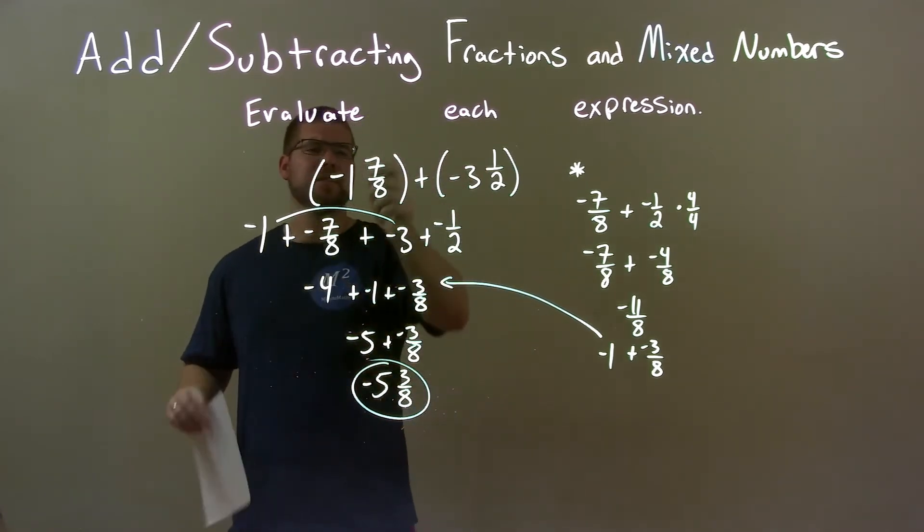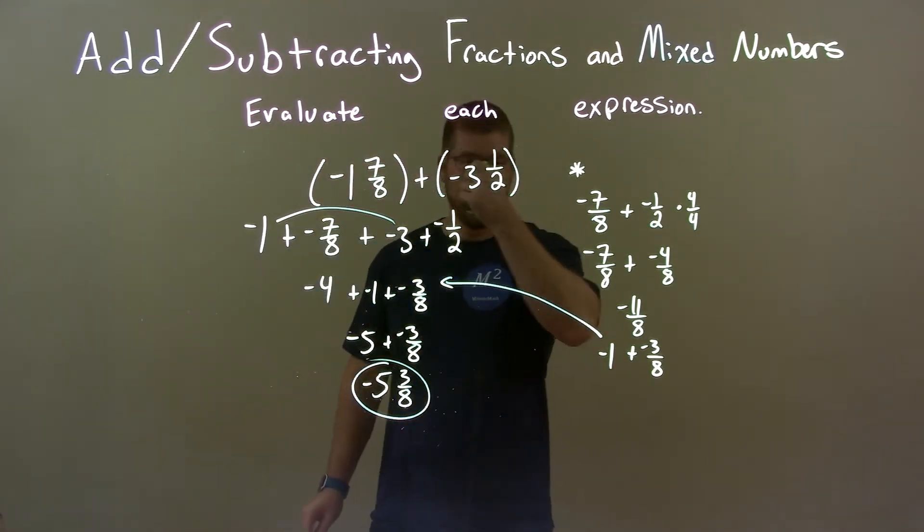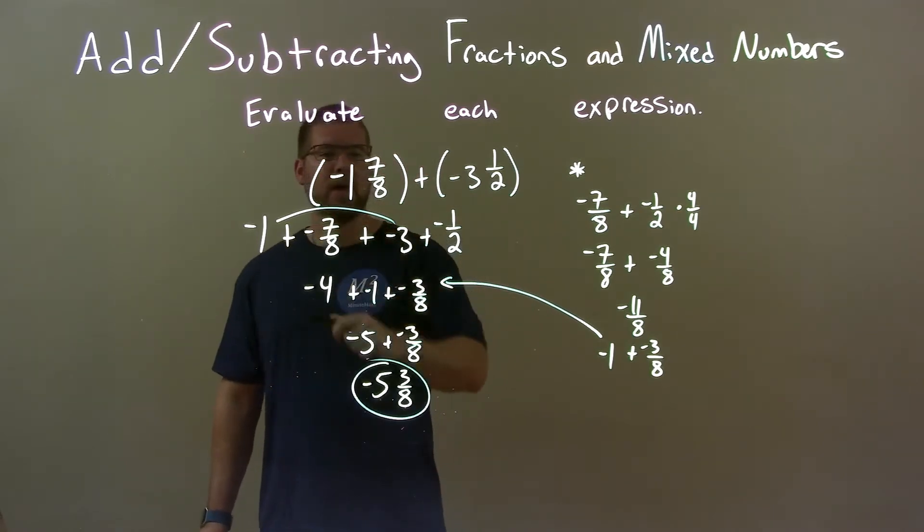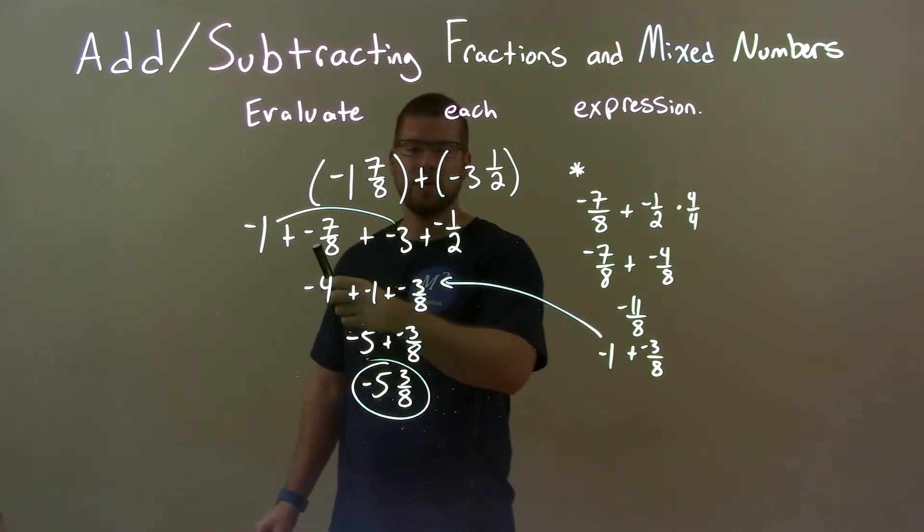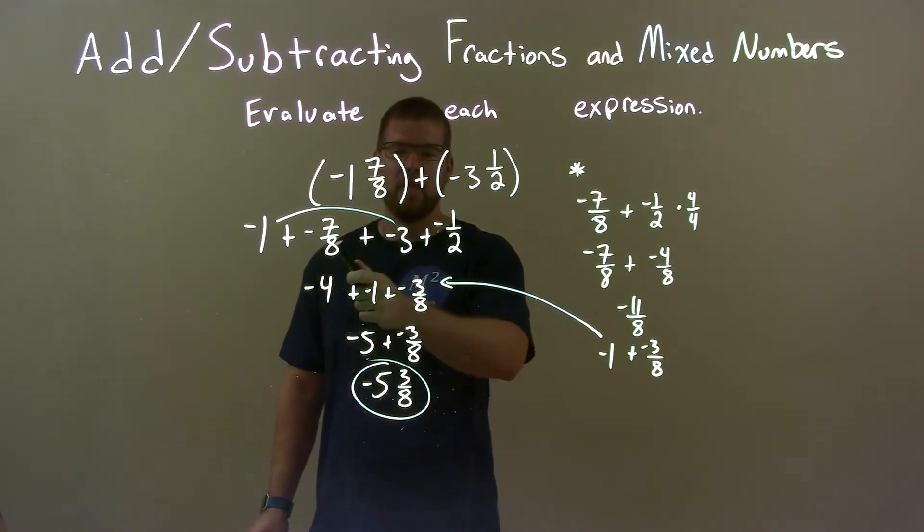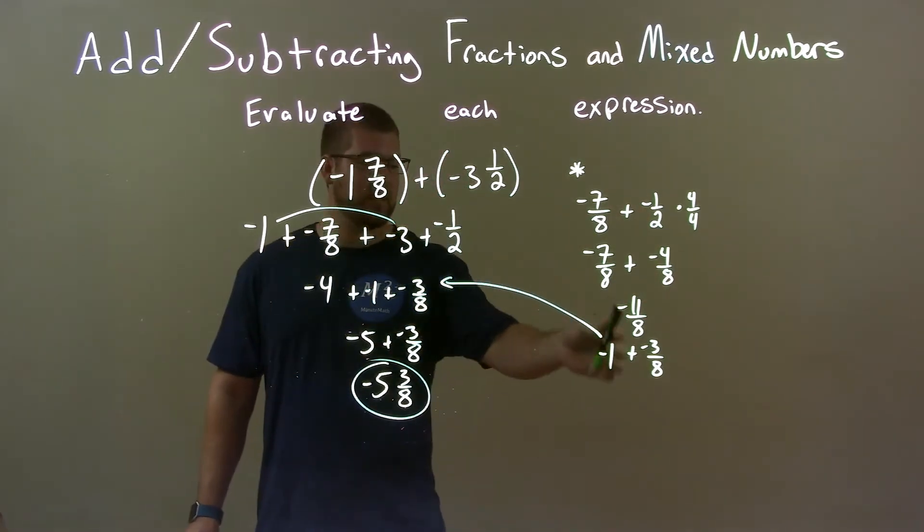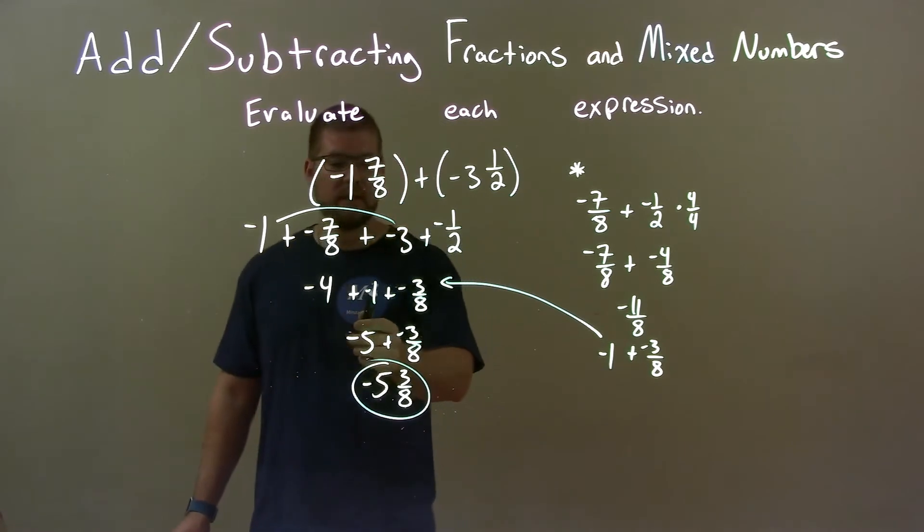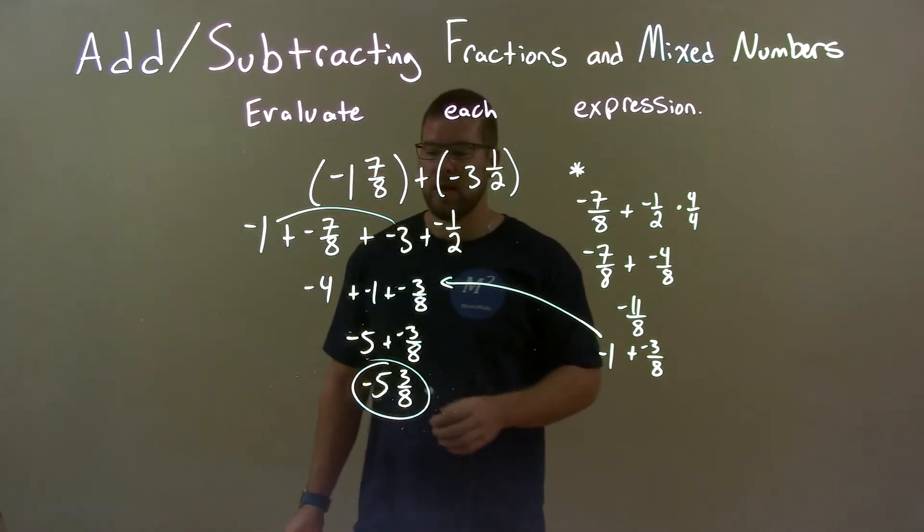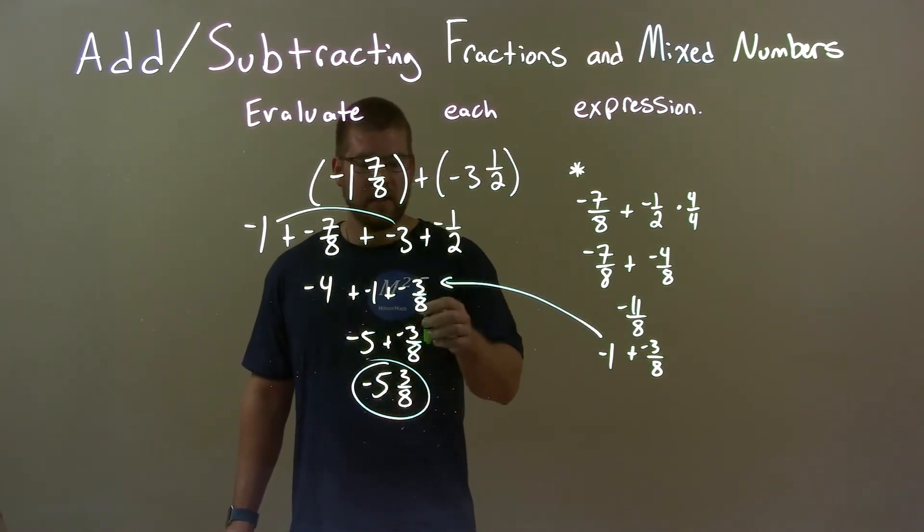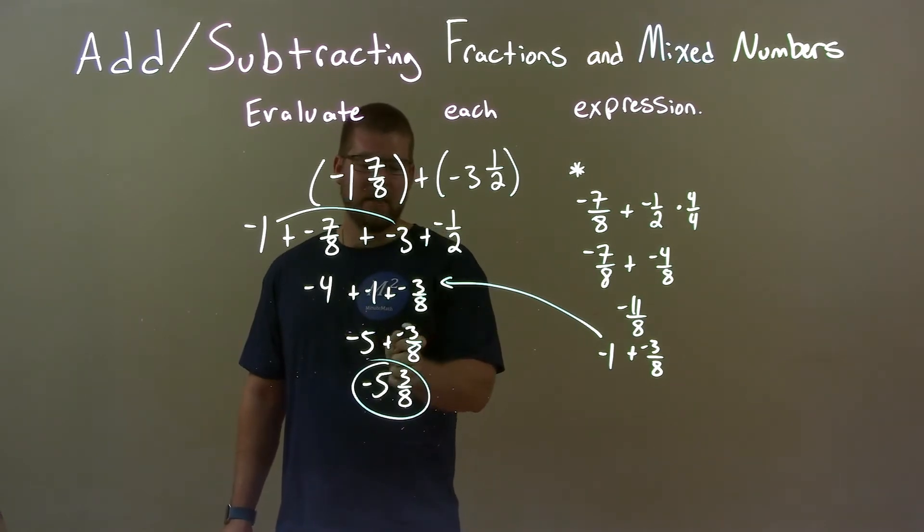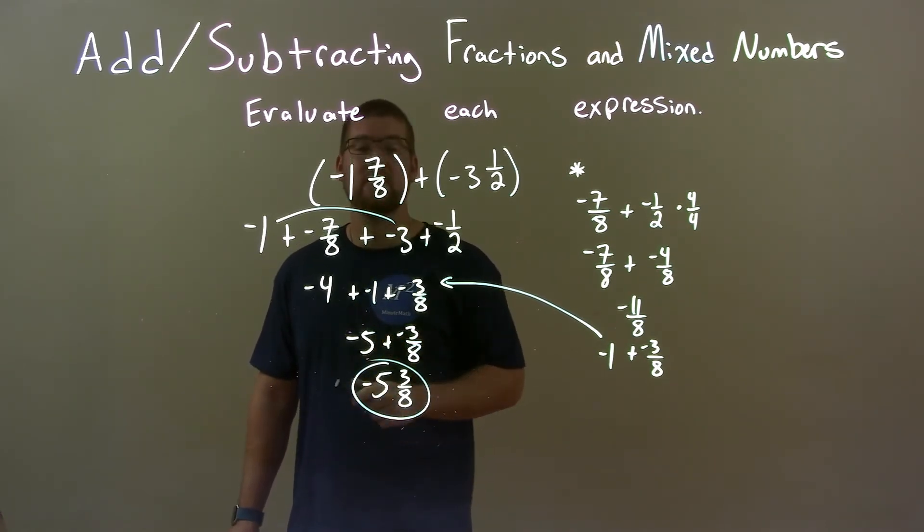So, quick recap, we're giving negative 1 and 7 eighths plus a negative 3 and 1 half. I broke those down to be a whole number and proper fraction. I added the whole numbers, but then I also added the fractions. So, we have negative 4 plus a negative 1 plus a negative 3 eighths. Combine the whole numbers again. Then, put together our whole number and our fraction to get our final answer, negative 5 and 3 eighths.